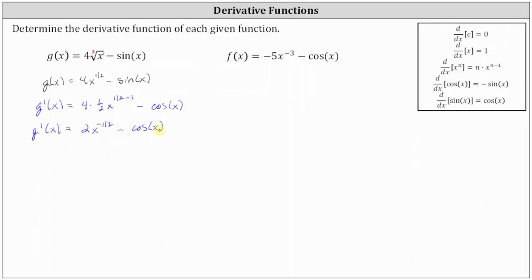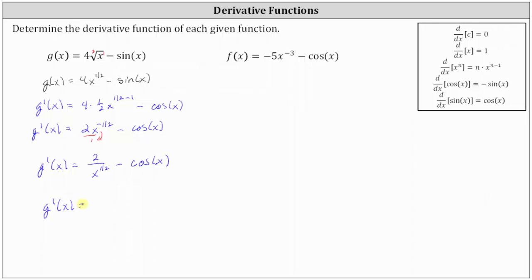While this is the derivative function, it's more common to express the derivative using positive exponents. If we think of 2x to the power of negative 1 half as a fraction with a denominator of 1, we can move x to the power of negative 1 half down to the denominator, which will change the sign of the exponent. So we express the derivative as g prime of x equals 2 divided by x to the power of positive 1 half minus cosine x. Another common way is to write x to the power of 1 half back in radical form, giving us g prime of x equals 2 divided by the square root of x minus cosine x.